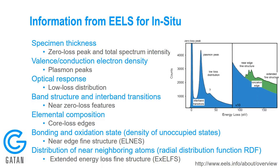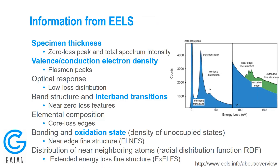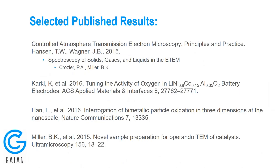Specifically today, I'm going to show examples of four types of information. I'll show an example where EELS is used to measure specimen thickness — specifically the gas thickness. I'll show examples of measuring the electron density, which gives you an idea of the temperature of the sample. I'll show an example of an interband transition and also of an oxidation state change, all within the next few slides.